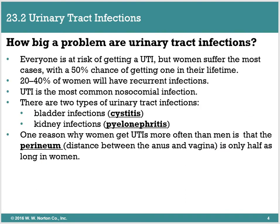UTIs are urinary tract infections. They are very very common — everybody is at risk because we all have a urinary system. But women tend to suffer a lot more and have a higher chance of getting them, solely because of women's anatomy. Most women will likely have one UTI in their lifetime, but there is a good percentage that will have recurring infections. UTIs are probably the most common nosocomial infection, meaning you get it while in the hospital, often because of a catheter.